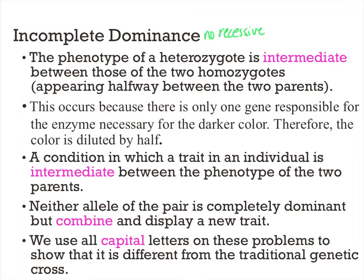Because of this, you'll use all capital letters when you're doing the Punnett squares. With incomplete dominance, I think of it like this: red plus white equals pink. What happens is the red is incompletely red and the white is incompletely white whenever it's heterozygous — when both genes are there. So you get offspring that are pink; they're in between. It's an intermediate phenotype.